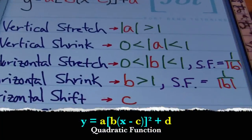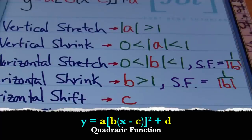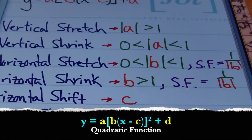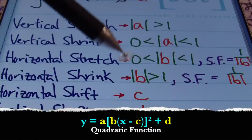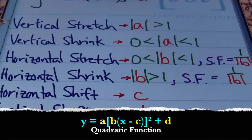If the function has a horizontal stretch, the absolute value of its B value is going to be between 0 and 1. The scale factor for the horizontal stretch will be 1 divided by the absolute value of B. If your instructor requests the scale factor, you simply place 1 over the absolute value of B and simplify. Likewise, if this function has a horizontal shrink, the absolute value of B is greater than 1, and you find the scale factor the same way — 1 over the absolute value of B.